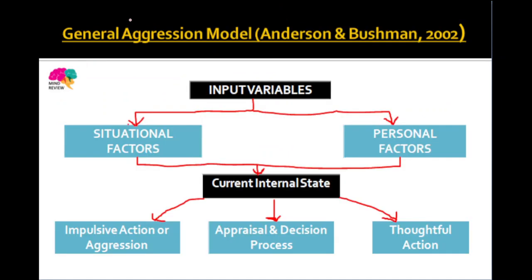So the frustration-aggression hypothesis by Dollard and Miller tells us that frustration of any kind can lead to every type of aggression. The final theory we will discuss is the general aggression model, given by Anderson and Bushman in 2002. According to this model, there are input variables — situational factors and personal factors. Situational factors include things like witnessing aggressive modeling in your environment or receiving aggression-provoking cues around you.